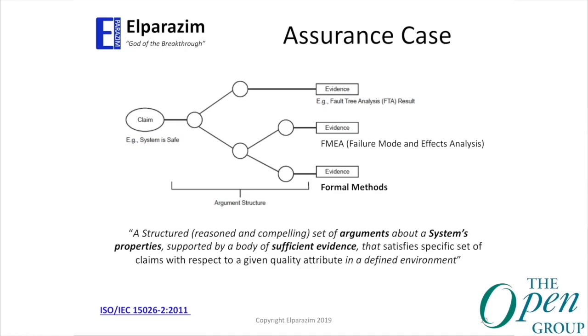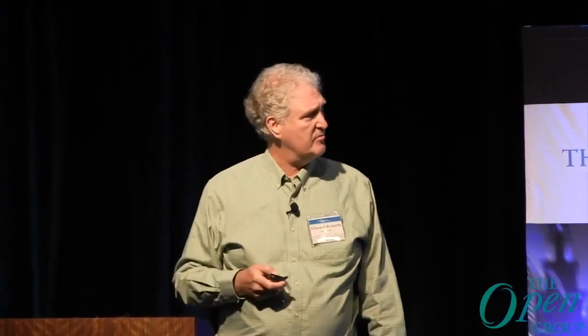An assurance case is formed as follows: you have a top-level assurance claim — for example, 'the system is safe' — which breaks down into sub-claims. Stakeholders must agree that the argument is correctly formed. And we don't get off the hook: we must provide evidence at the leaf claims to show that the properties actually hold. That's how we prove that the system is assured and can be trusted.